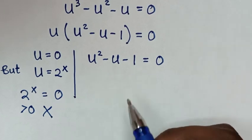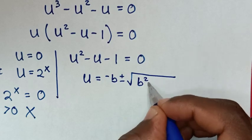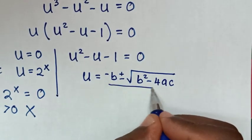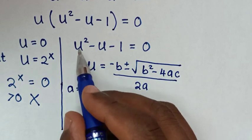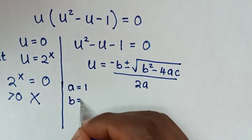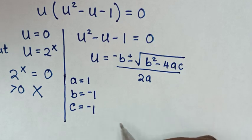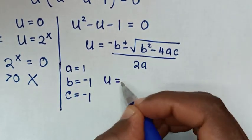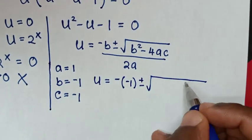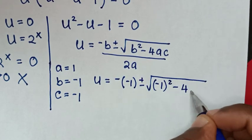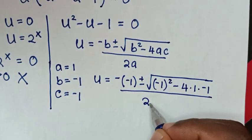We continue solving the quadratic u squared minus u minus 1 equals 0 using the quadratic formula: u equals negative b plus or minus square root of (b squared minus 4ac) over 2a. Here a equals 1, b equals negative 1, and c equals negative 1.